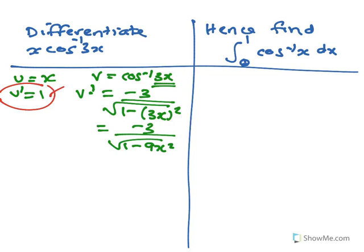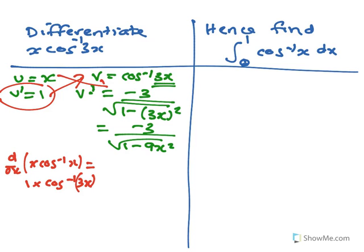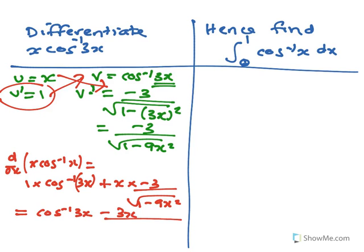Starting with this one — using the product rule for d/dx of x·cos⁻¹(x) — that's going to be 1 times cos⁻¹(3x), and then plus x times minus 3 over root 1 minus 9x².